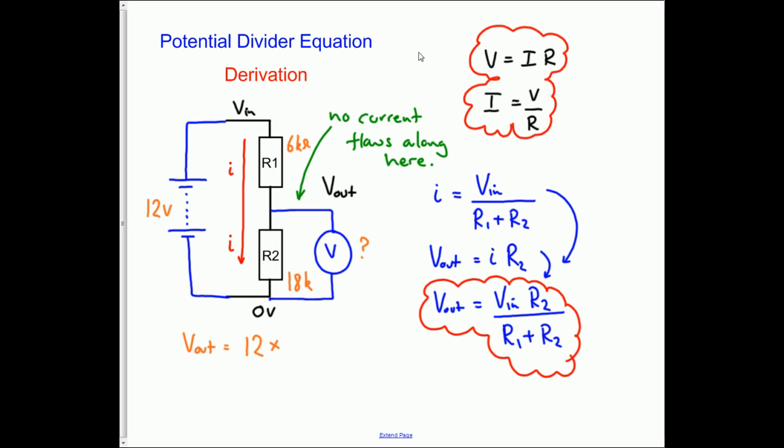In our equation, V_out = V_in, which is 12, times R2, which is 18k, divided by R1, which is 6k, plus R2, which is 18k, which equals 12 × 18 / (6 + 18) = 12 × 18 / 24.